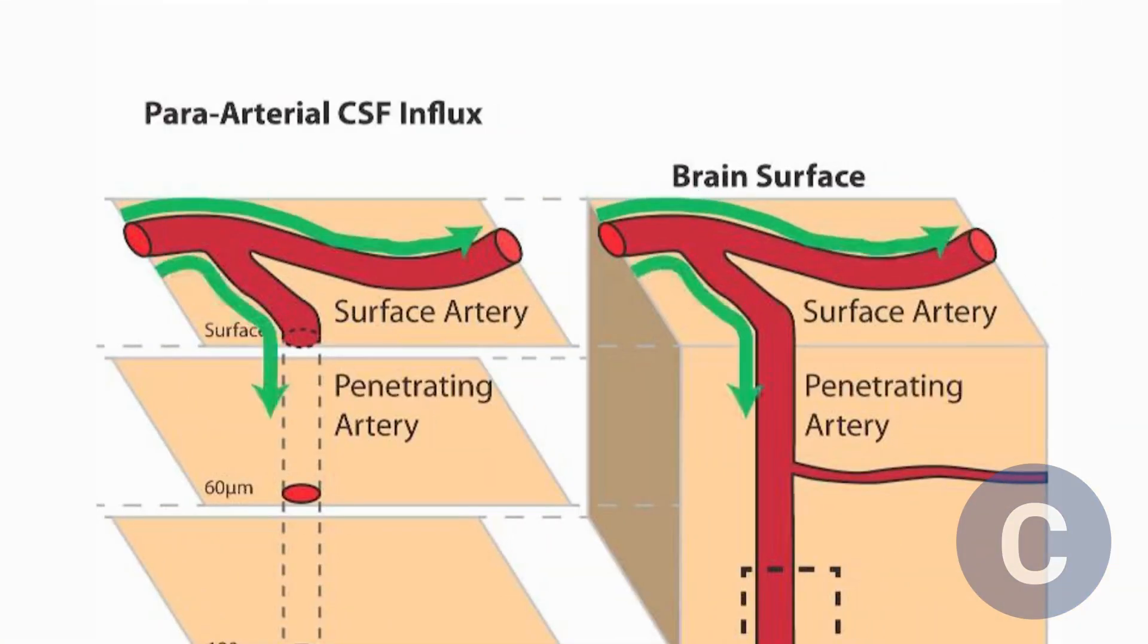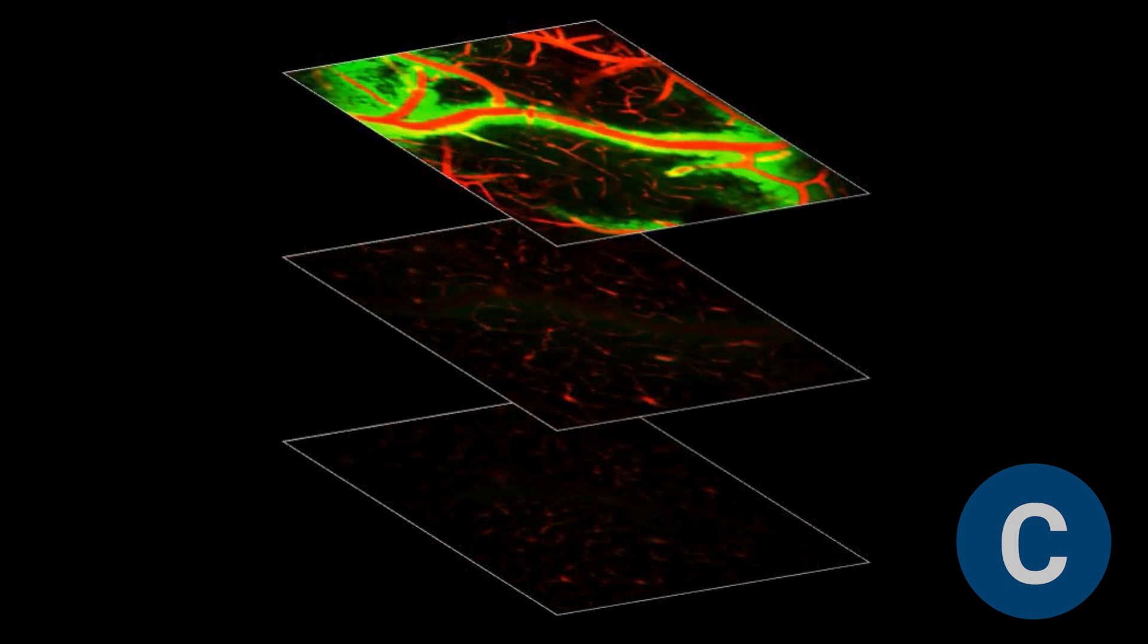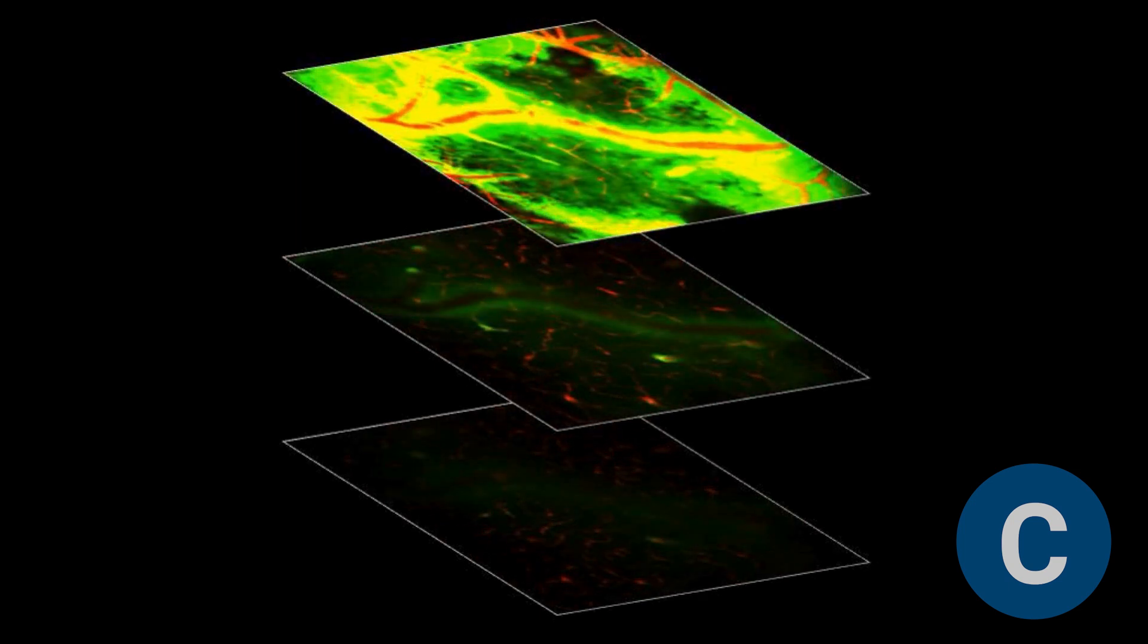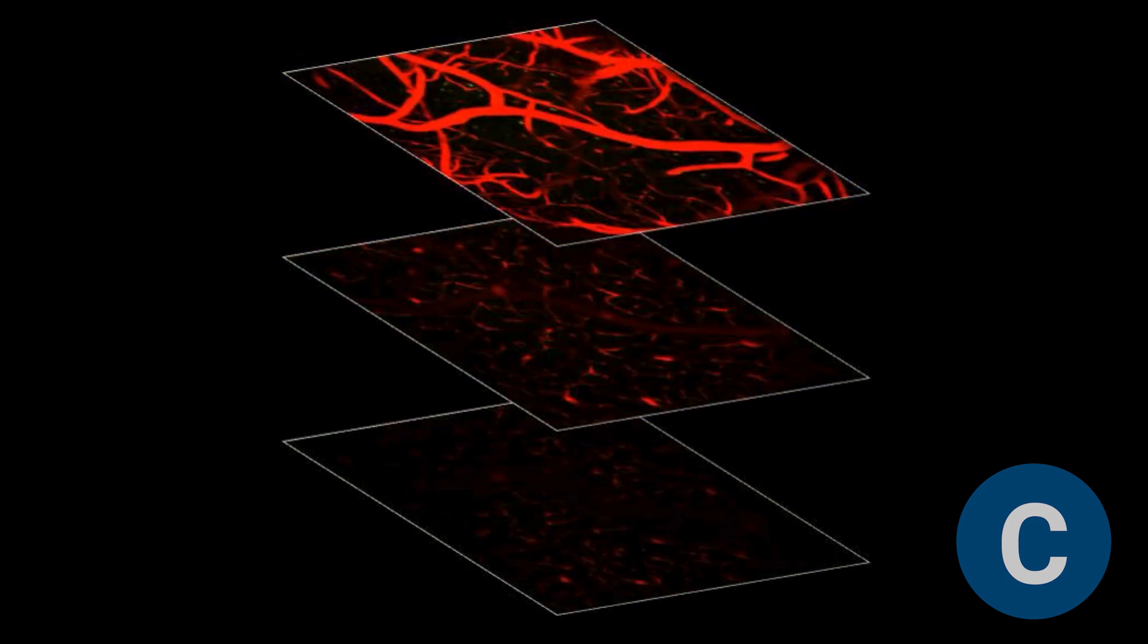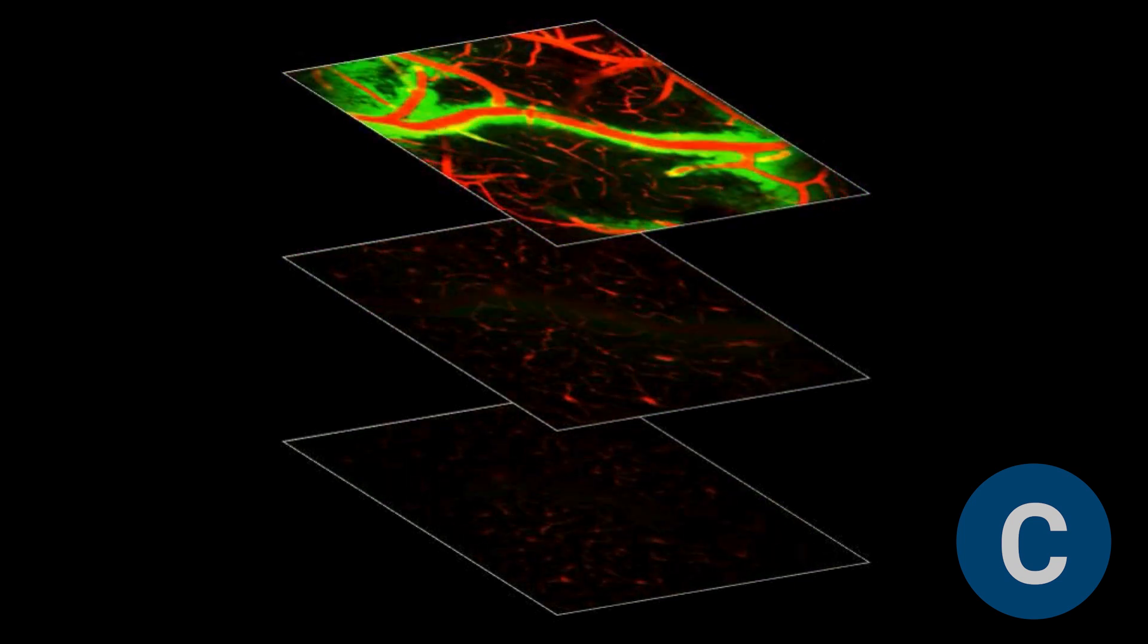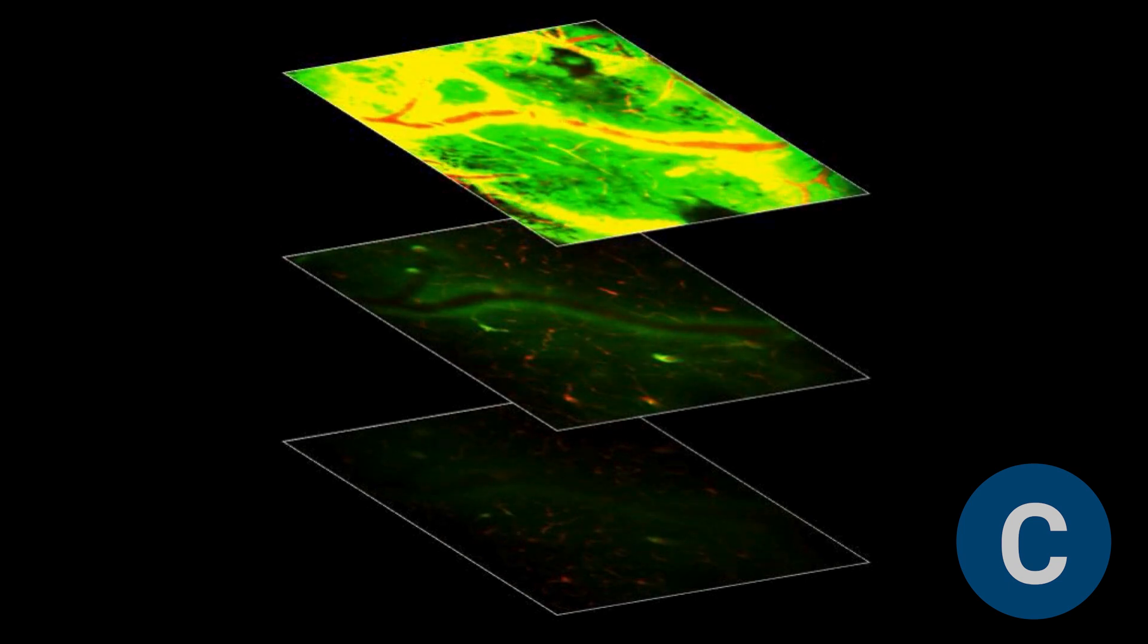The researchers observed that cerebrospinal fluid moves quickly along the surface cortical arteries and through the arterioles that extend deep into the brain. It's important to note that cerebrospinal fluid doesn't flow inside the arterioles themselves, but rather in a space next to them, called the paravascular space. This diffusion was observed using a fluorescent tracer, OA647, which showed how cerebrospinal fluid moves along the penetrating arteries, reaching deep capillaries, including those in the thalamus and basal ganglia.